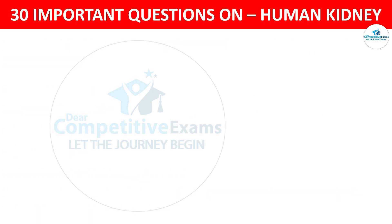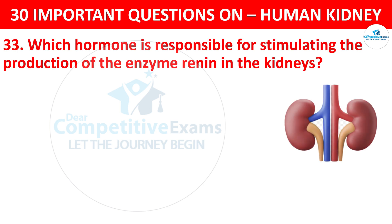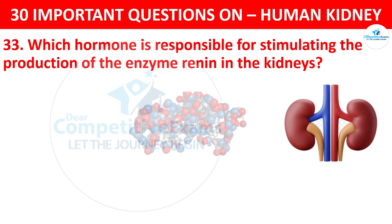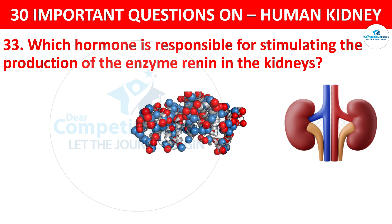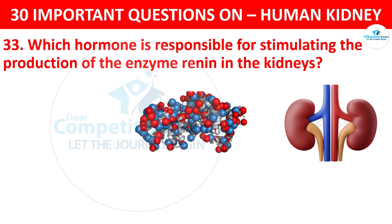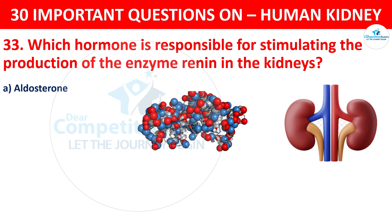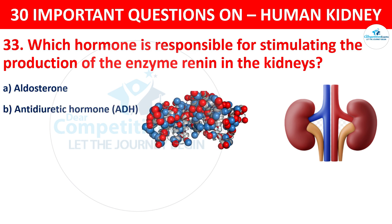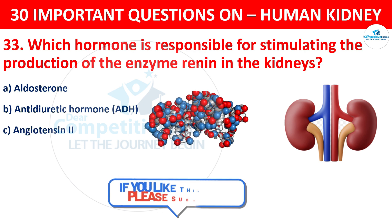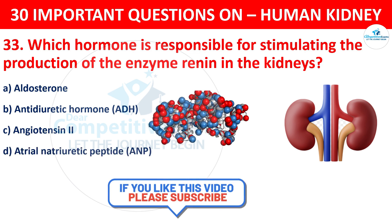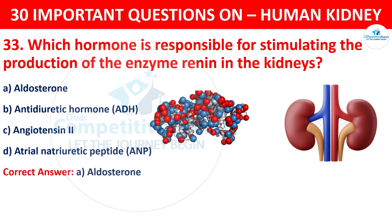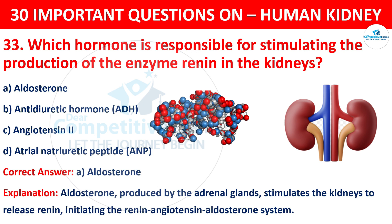Question number 33. Which hormone is responsible for stimulating the production of the enzyme renin in the kidneys? The options are aldosterone, anti-diuretic hormone (ADH), angiotensin 2, or atrial natriuretic peptide (ANP). The correct answer is A, that is aldosterone. Aldosterone, produced by the adrenal glands, stimulates the kidneys to release renin, initiating the renin-angiotensin-aldosterone system.